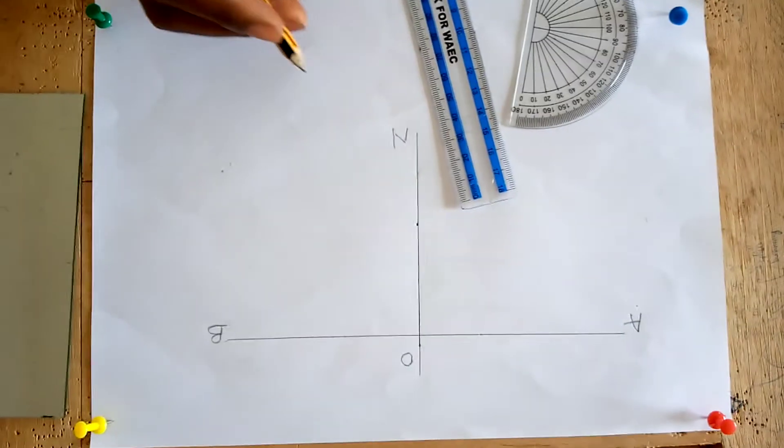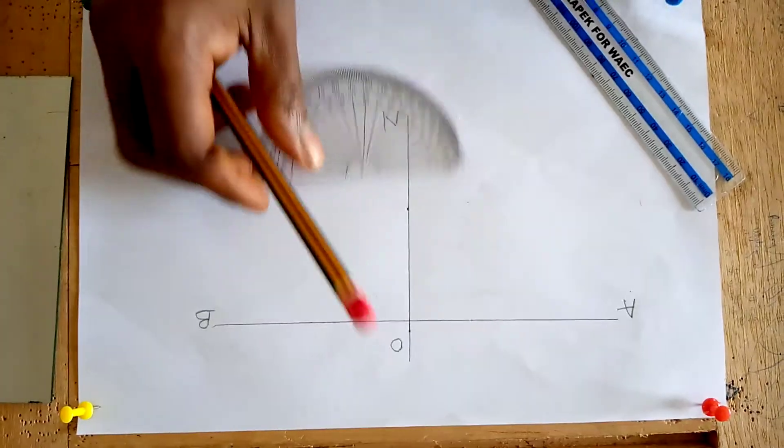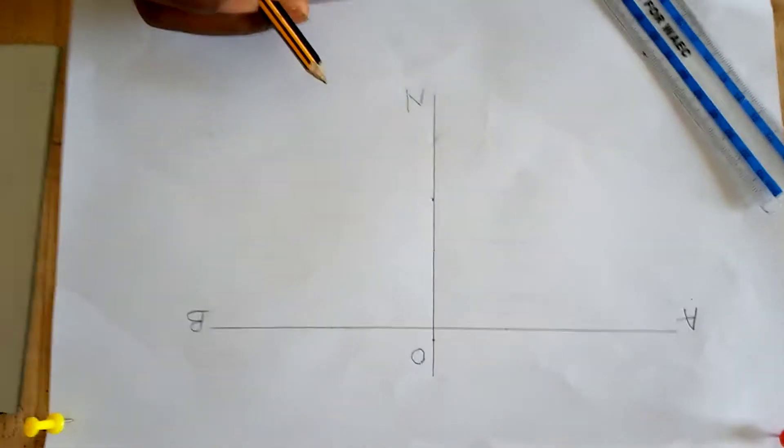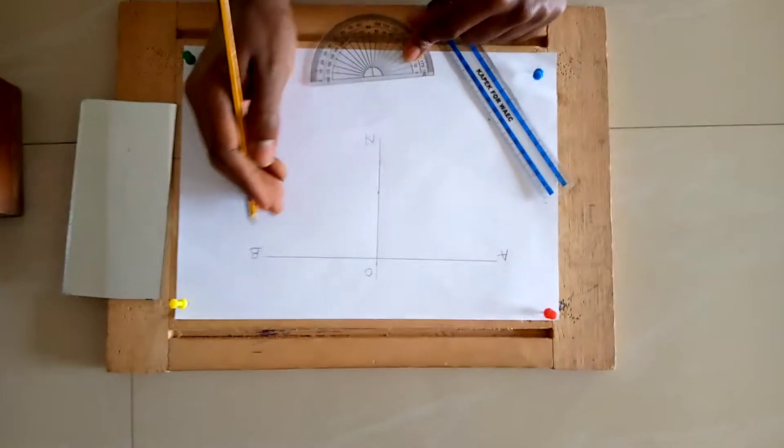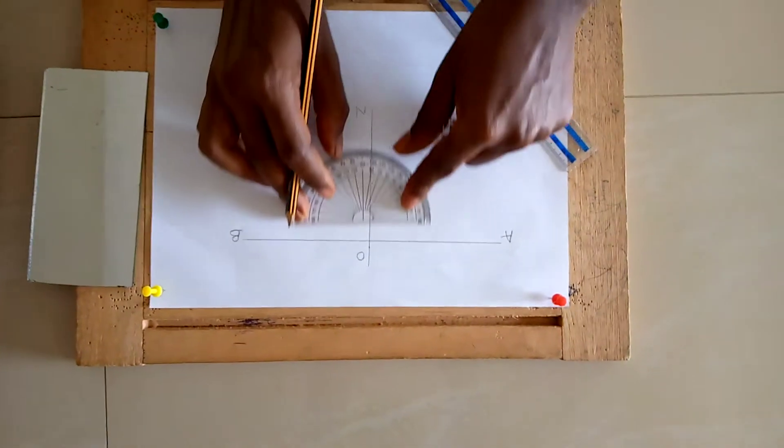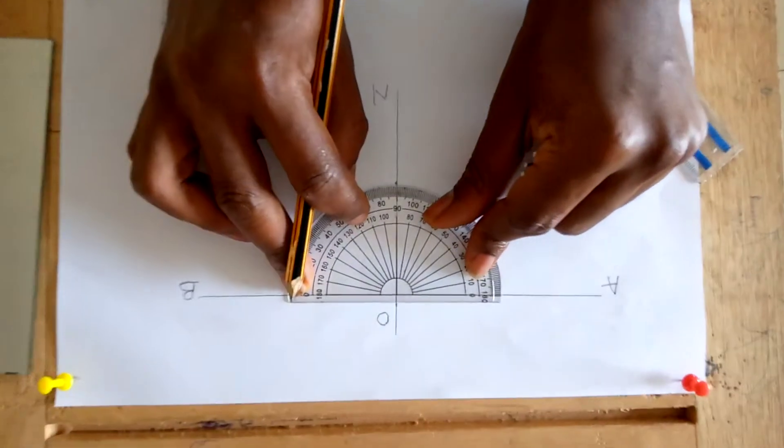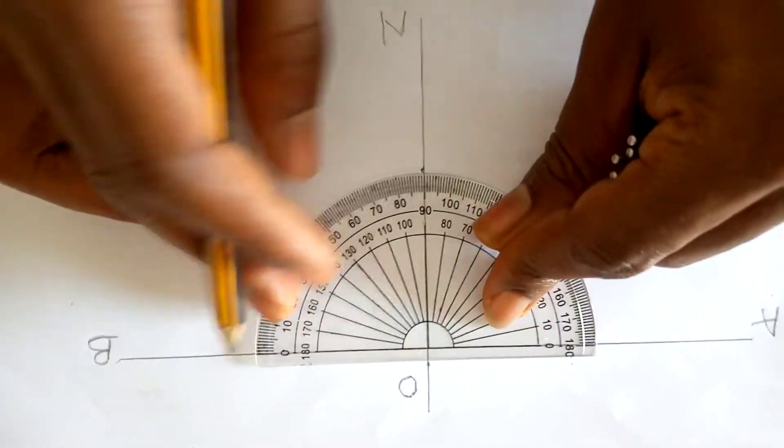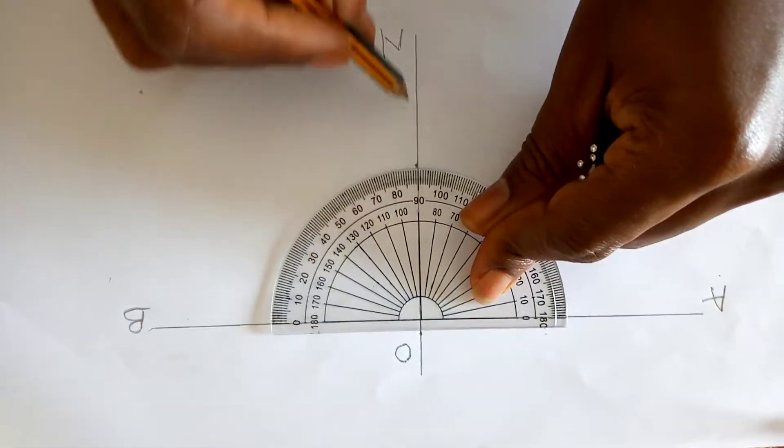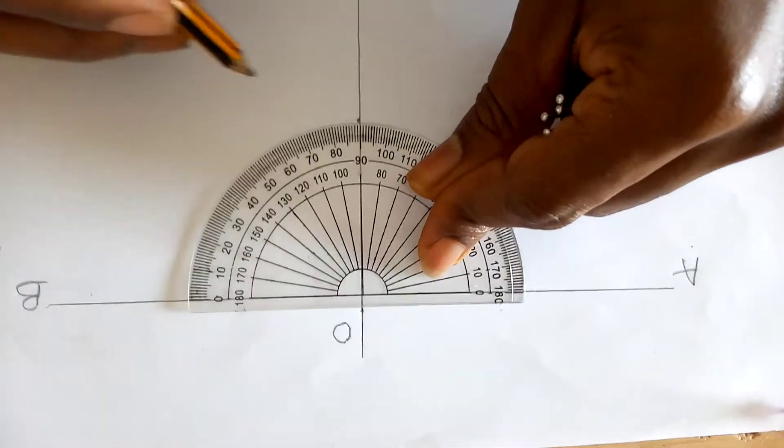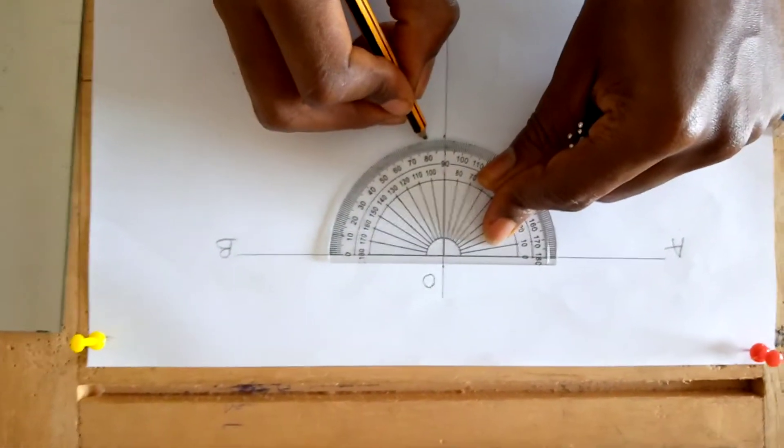Use your protractor to measure 30 degrees on BN, which is the right-hand side of your paper. Place your protractor and make sure that the 180 degrees line is on the line AB and the 90 degrees is on the line ON.